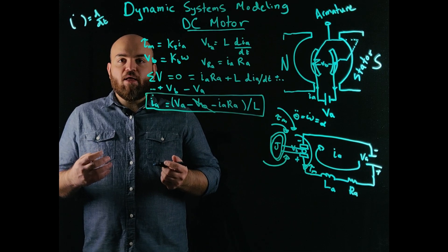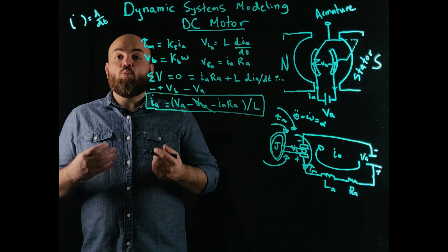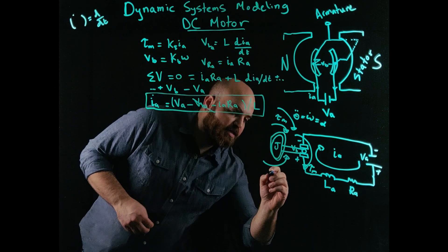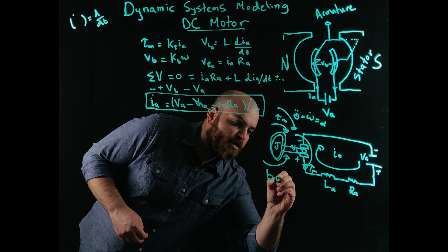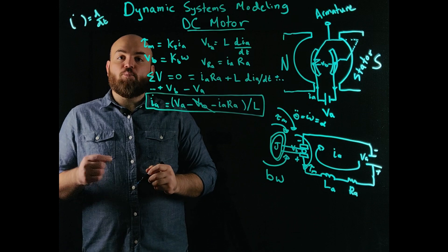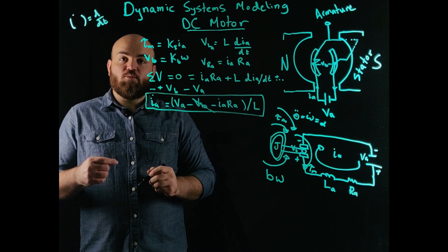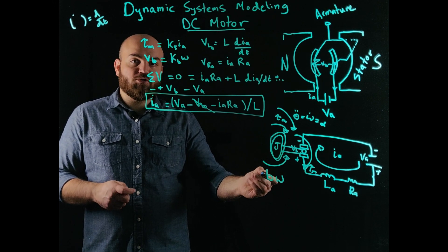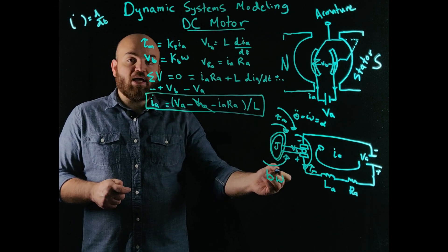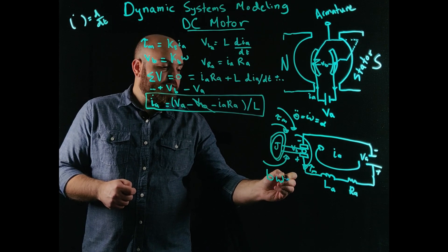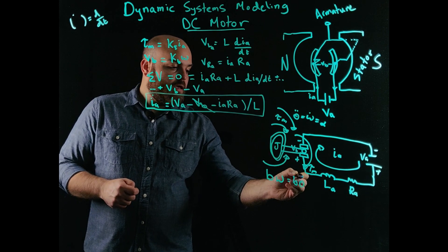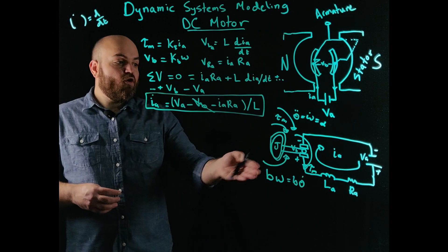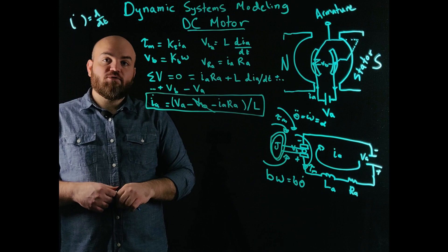Now friction can be modeled in multiple different ways. One model, which is simple yet effective, is the Coulomb friction. And that states that the friction itself is proportional to the speed at which the thing that has friction is moving. In this case, let's say that the constant proportional constant B multiplied by omega, or theta dot, and that gives me my friction torque. So great. Now I know everything that's working on this shaft. What do I do with it? I can draw a free body diagram of the shaft.